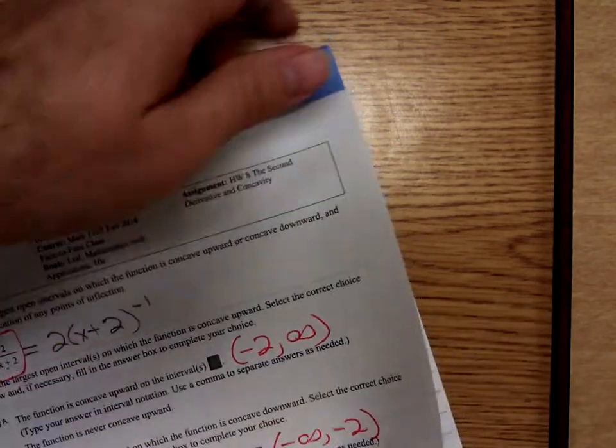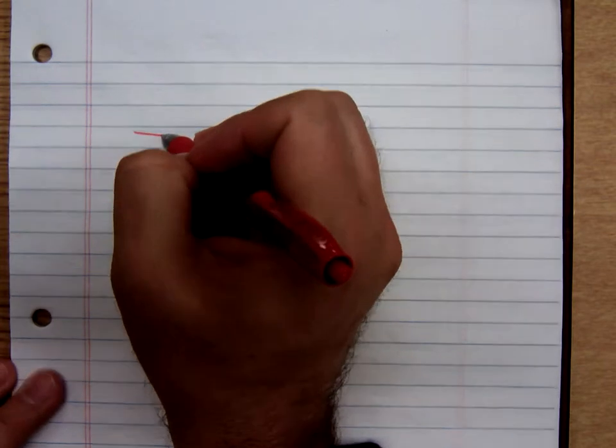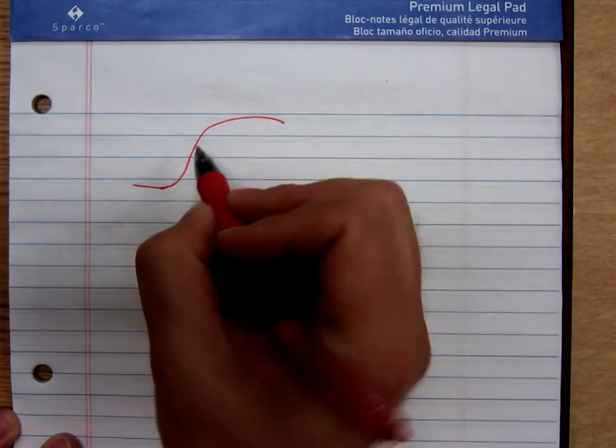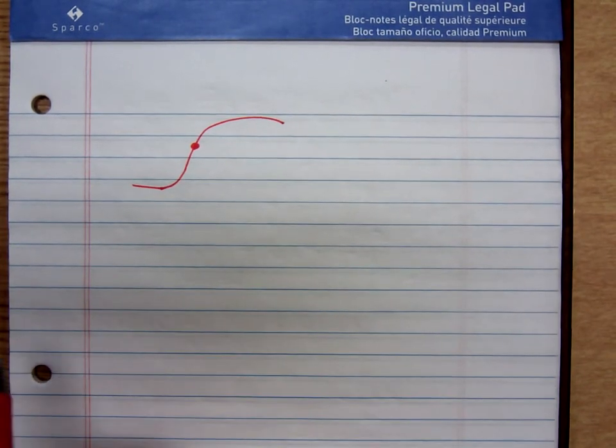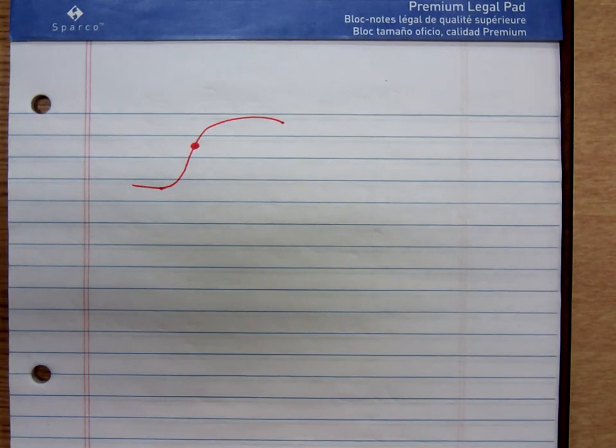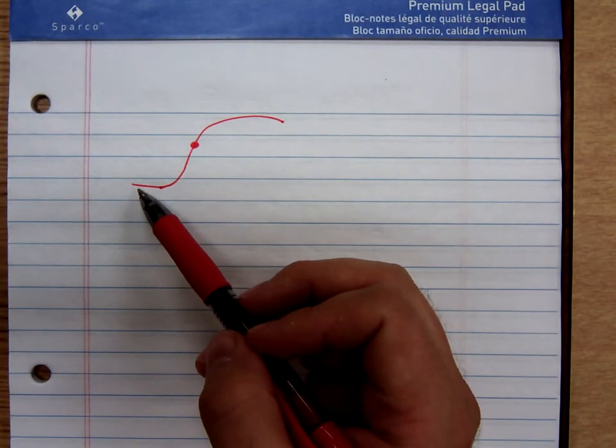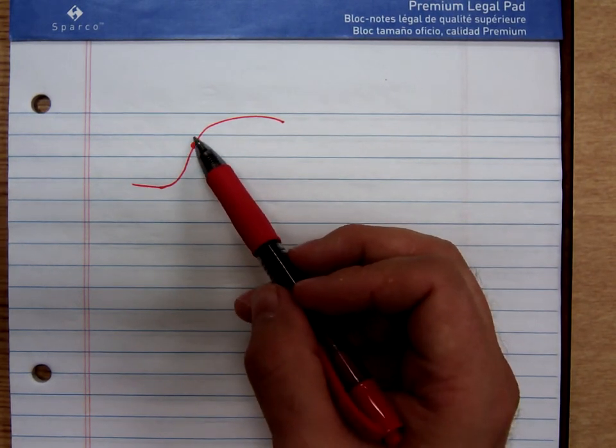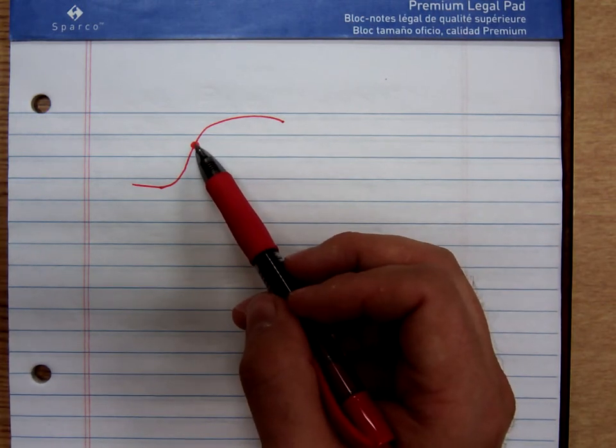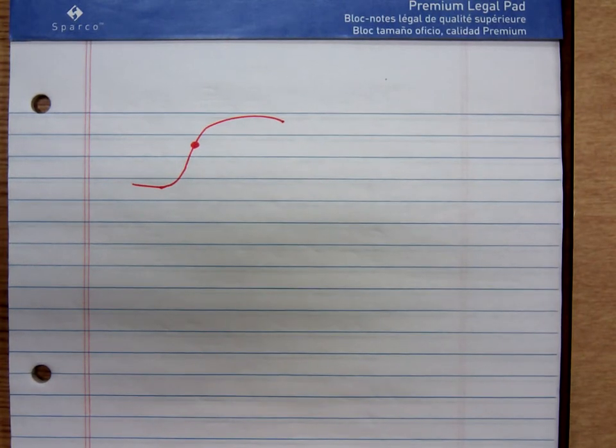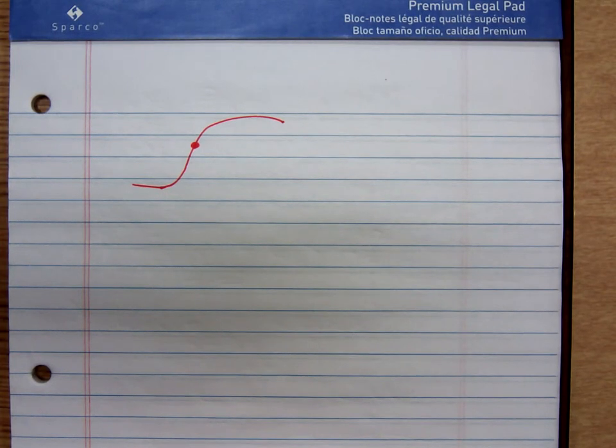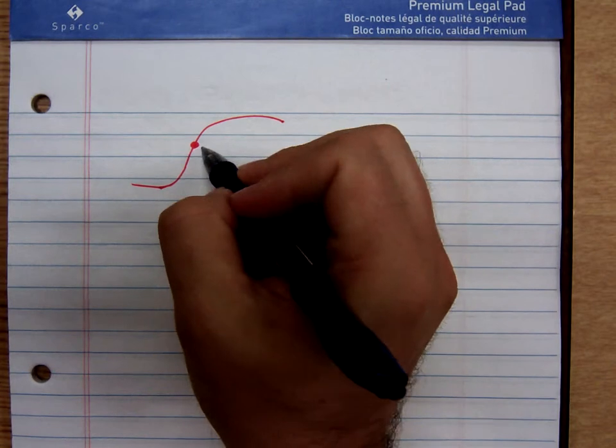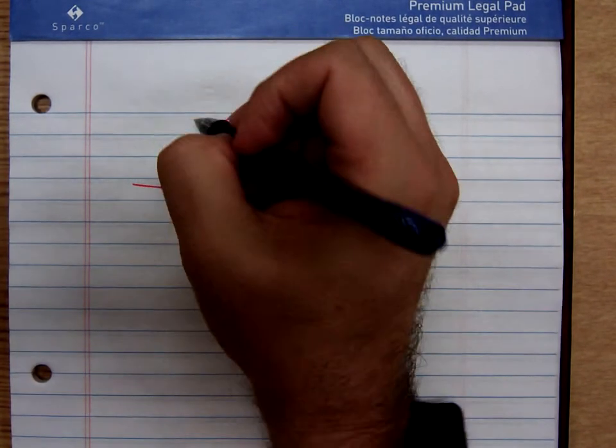And an interesting application of concavity is the point of diminishing returns. A point of diminishing returns occurs when a graph is concave upward and then changes to concave downward. A good example of this would be money spent on advertisement. Up to a point, the more money you spend on advertisement, the quicker your revenue is growing. But after a certain point, additional money you spend is not yielding as high a return. And businesses consider money spent after that certain point as a poor use of your company's money.